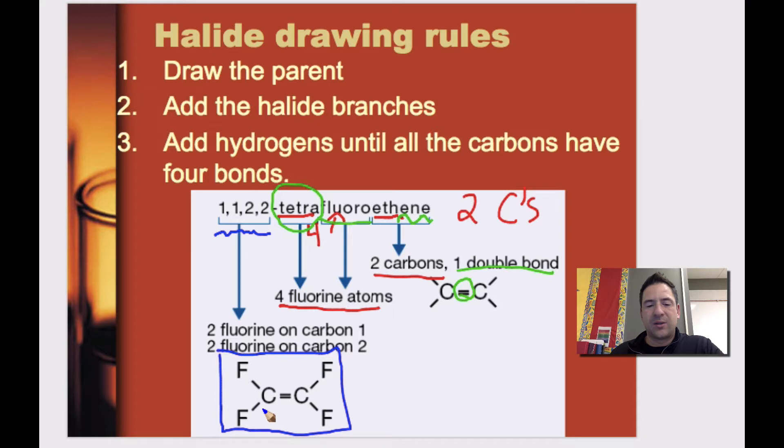So if we numbered these one and two, this would be 1,1, tetrafluoro, because 1,1 and 2,2, tetra, one, two, three, four fluorines F, F, F, F, and ethene, double bond, two carbons, ethene. So that's how we would name it.